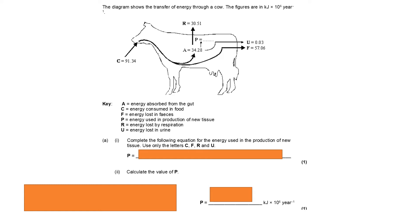So we've got here various different numbers, and we've got a key. A is energy absorbed from the gut. C, energy consumed in food. F, energy lost in feces.